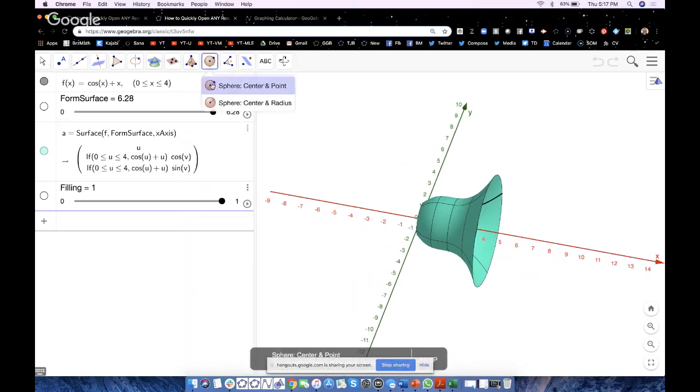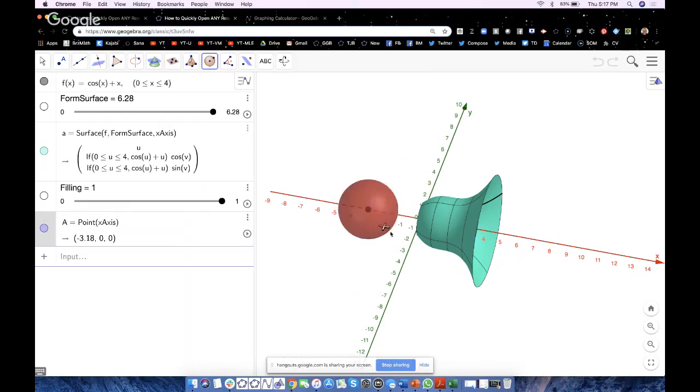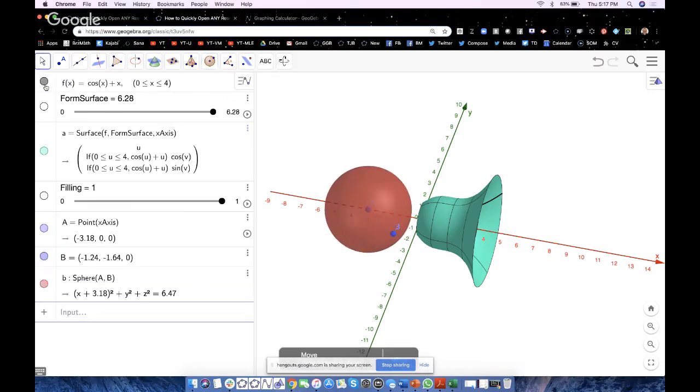You can continue adding to this construction right here. So let me maybe make a sphere, for example, in here, centered here and whatever. So I added to it. Now I can save it and do whatever.